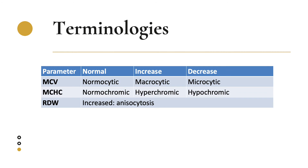Let's now look at terminologies associated with RBC parameters. For MCV, or mean cell volume, this gives a picture of how big or small our red blood cells are. A normal MCV is referred to as normocytic; an increased MCV is macrocytic; and a decreased MCV is microcytic. For MCHC, or mean cell hemoglobin concentration, a normal value indicates normochromic cells, while an increased value indicates hyperchromic, and a decreased value indicates hypochromic cells. An increased RDW may indicate anisocytosis. These terminologies help narrow down or pinpoint various anemias.